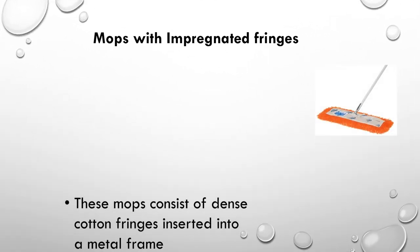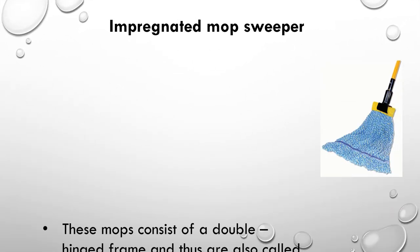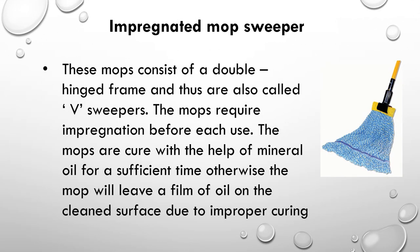Mops with impregnated fringes consist of dense cotton fringes inserted into a metal frame. These mops are usually pre-impregnated, meaning they are already soaked or saturated with a substance. If not, they will require impregnation by soaking in or spraying with mineral oil or a synthetic impregnating fluid. The dust is held on the mops by the oil.